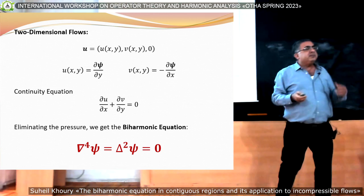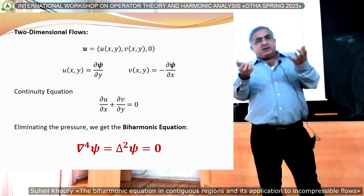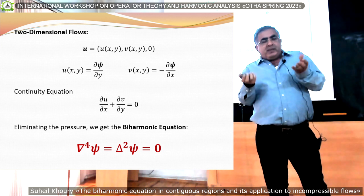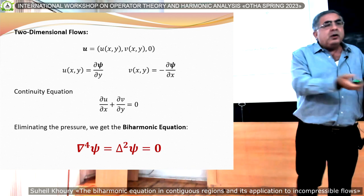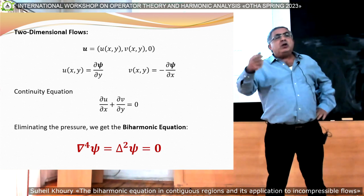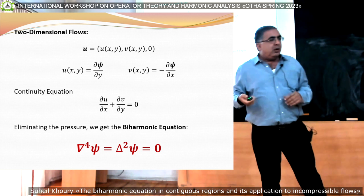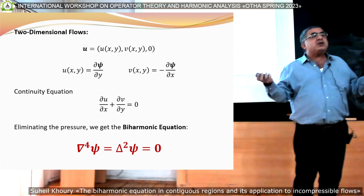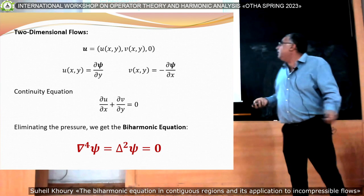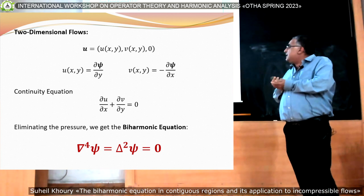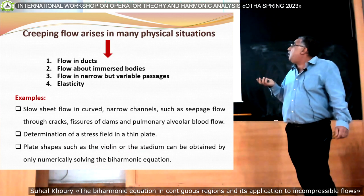The biharmonic equation. What does the biharmonic equation model? For small Reynolds number, it models the flow of a highly viscous fluid that moves very slowly. Sometimes this is called slow viscous flow, or creeping flow — creeping meaning slow flow. The famous term is Stokes flow: flow of a fluid that is highly viscous and moves very slowly. So here is the model: the biharmonic equation.